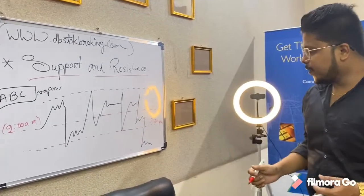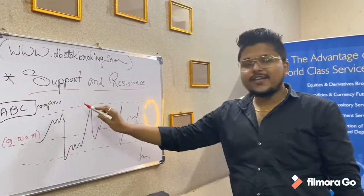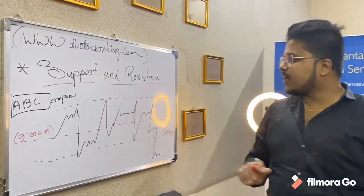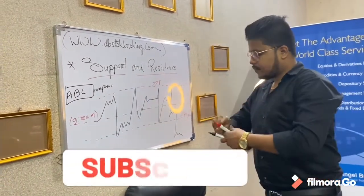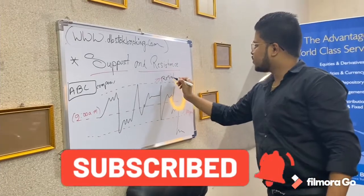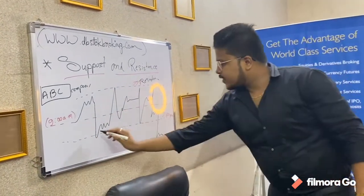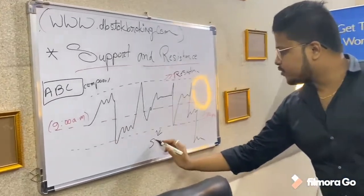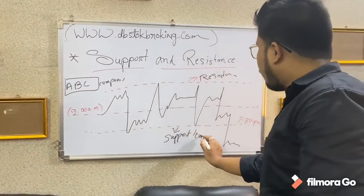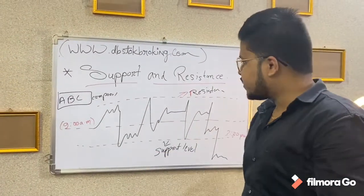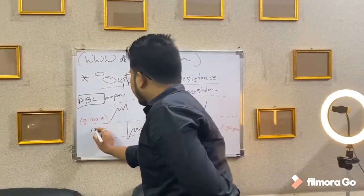Now what we can see here: the upper line, which you can see as the red dotted line, is basically the resistance level. This is the resistance level. The lower line is called the support level — the support level or support point of a particular stock. For example, A, B, C company's stock price today is, for example, 1,000.